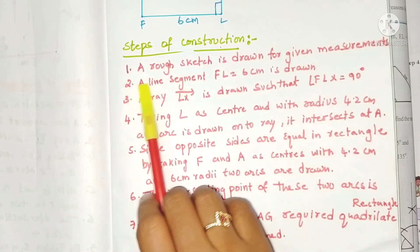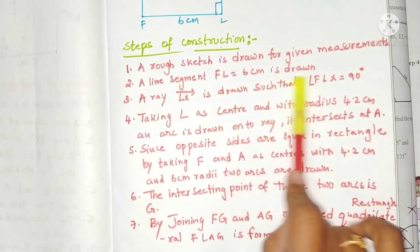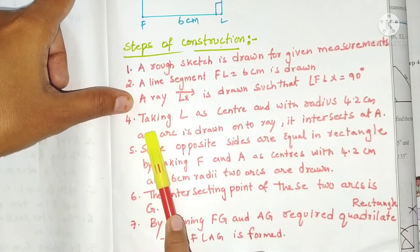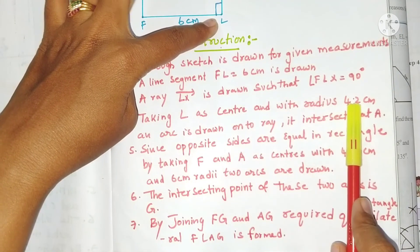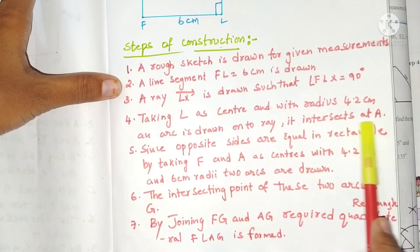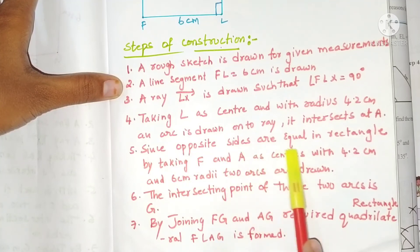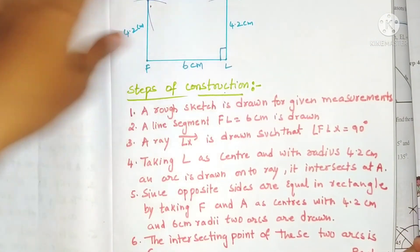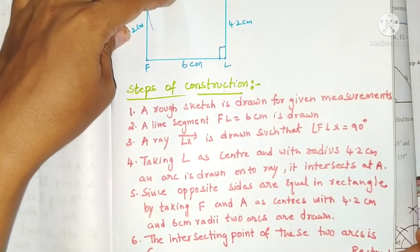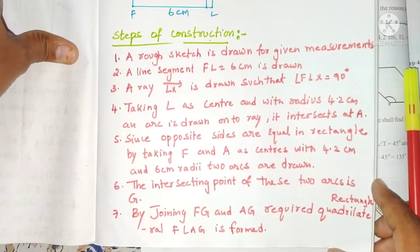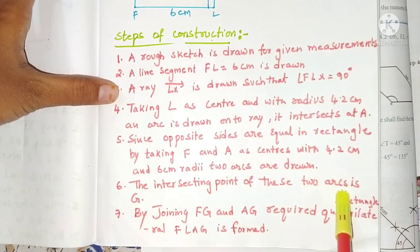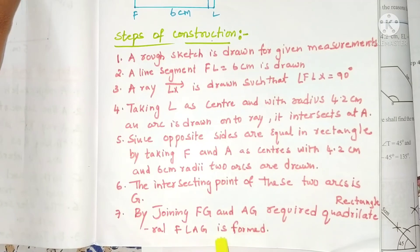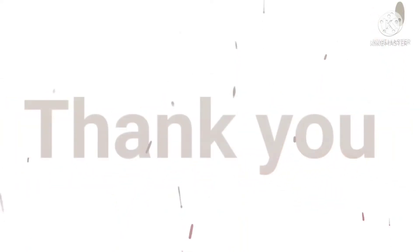Steps of construction: A rough sketch is drawn for the given measurements. A line segment FL = 6 centimeters is drawn. A ray LX is drawn such that angle FLX = 90 degrees. Taking L as center with radius 4.2 centimeters, an arc is drawn intersecting at A. Since opposite sides are equal in a rectangle, taking F and A as centers with radii 4.2 centimeters and 6 centimeters, two arcs are drawn. Their intersecting point is G. By joining FG and AG, the required quadrilateral FLAG is formed.